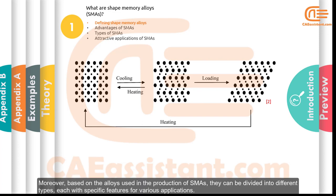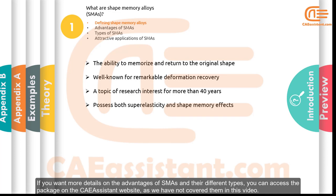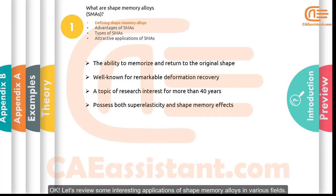Isn't that amazing? These remarkable abilities give SMAs many advantages compared to other materials. Moreover, based on the alloys used in their production, SMAs can be divided into different types, each with specific features for various applications. For more details on the advantages of SMAs and their different types, you can access the package on the CAE Assistant website.